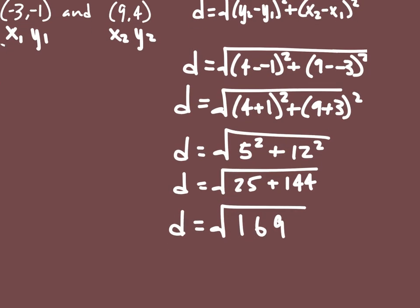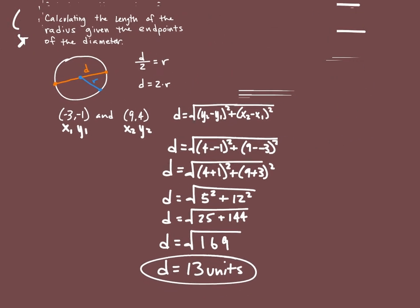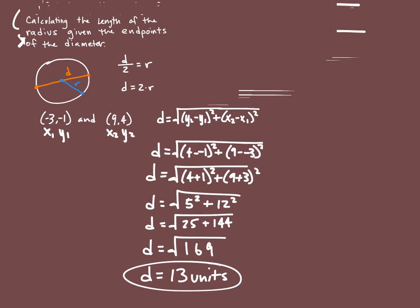So then the diameter, the distance of our diameter is going to be 13, so 13 units. And I'm using d and diameter kind of in the same way.